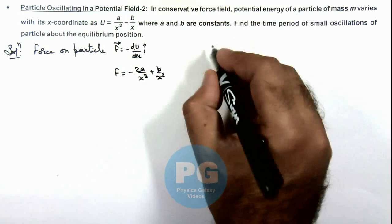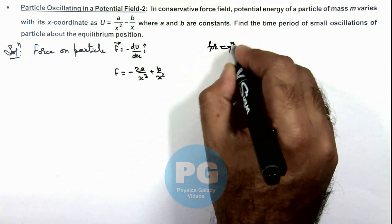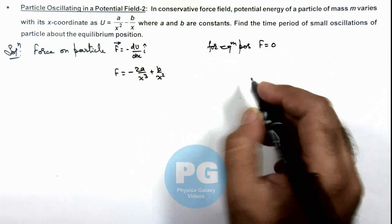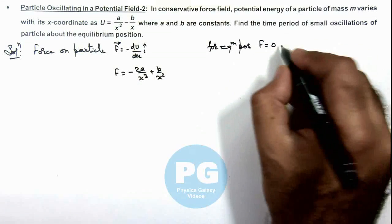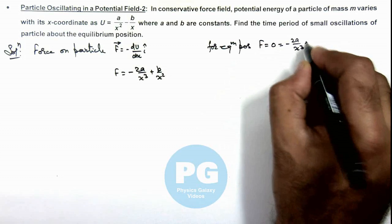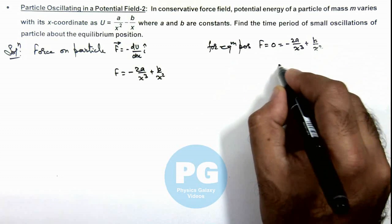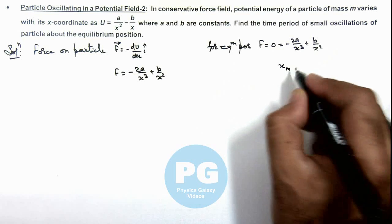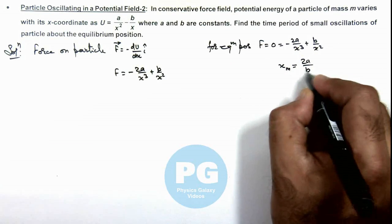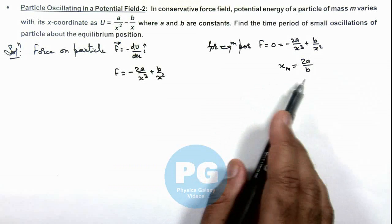Here we can see that for the equilibrium position, the force on the particle must be zero. If I equate this expression to zero — minus 2a/x³ plus b/x² equals zero — I'll get the value of x at the mean position as x₀ = 2a/b. So this is the position about which the particle will be oscillating.